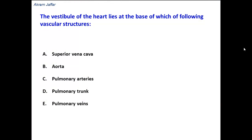The vestibule of the heart lies at the base of which of the following vascular structures? By definition, the vestibule of the heart is the outflow tract of the left ventricle, and the blood that passes into it goes into the ascending aorta.